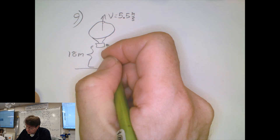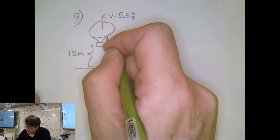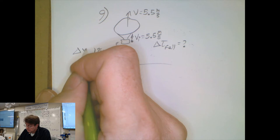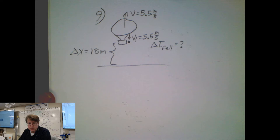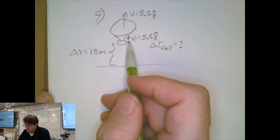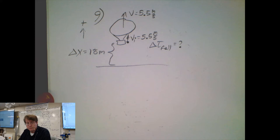Since the package was rising with the balloon when released, it has the same upward velocity as the balloon — so its initial velocity is 5.5 meters per second upward. Choosing up as positive, the 18 meters will have to be negative because the displacement is downward. We adjust displacement to negative 18 meters to account for direction.